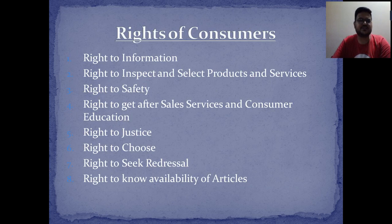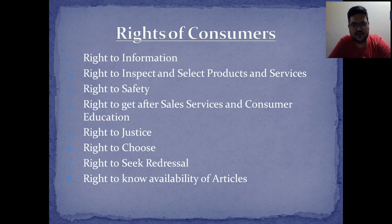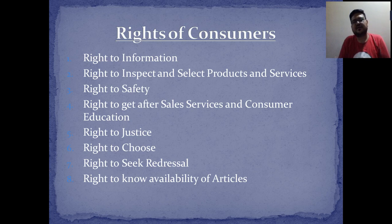That is the whole procedure for consumer protection — district forum, state commission, national commission, and finally the Supreme Court. Now we talk about the rights of consumers. Number one: right to information — as a consumer, when you buy a product you have the right to get complete information about it, printed on the product material and made available to you. You also have the right to inspect and select products and services.